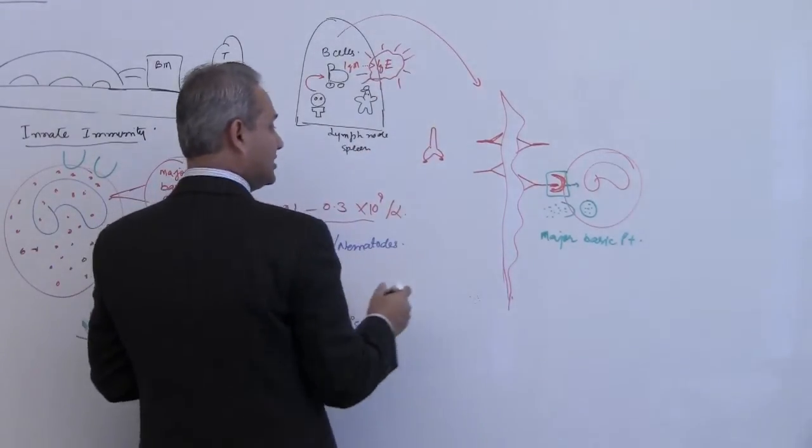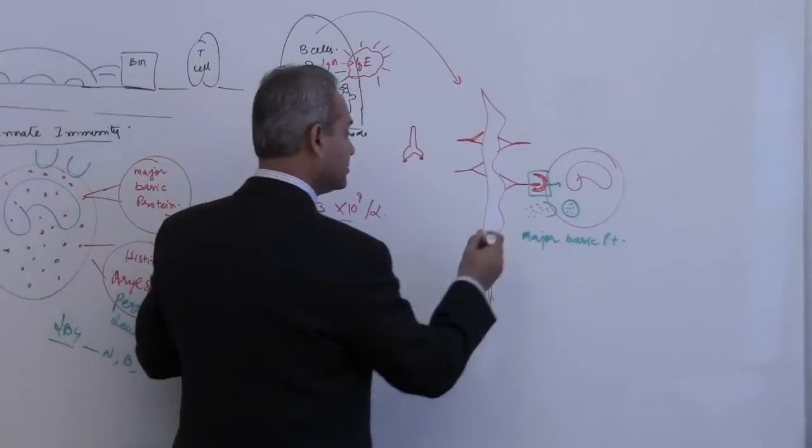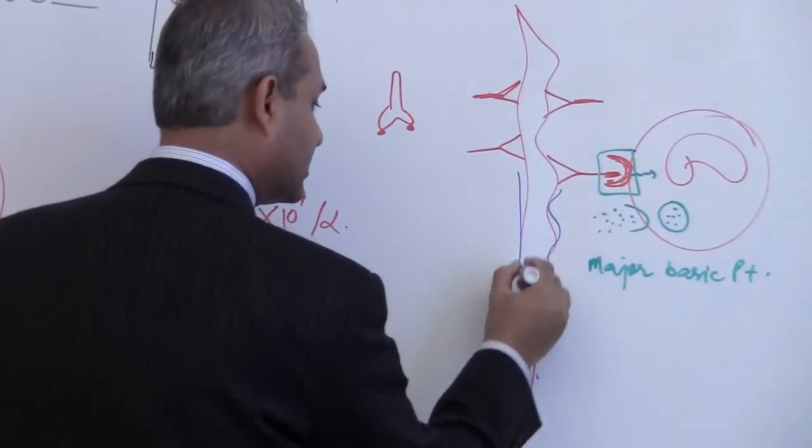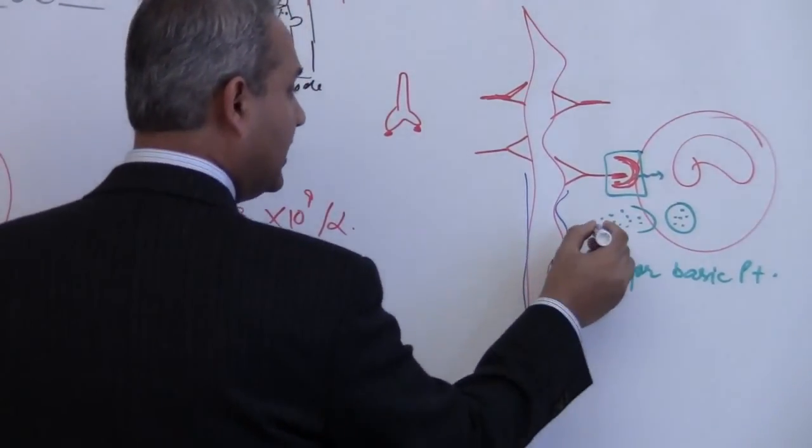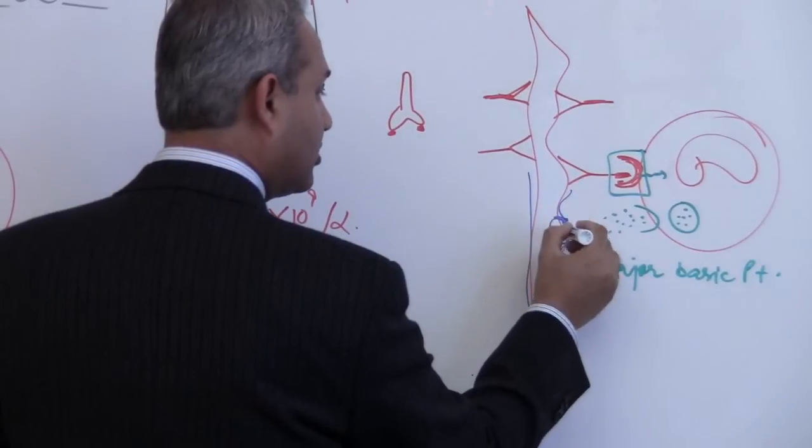This major basic protein attacks the cuticle. So these nematodes have their cuticle, thick skin. It attacks the skin and causes damage.